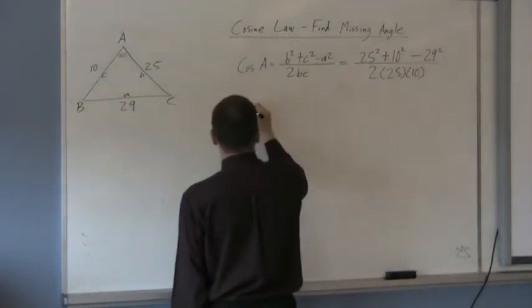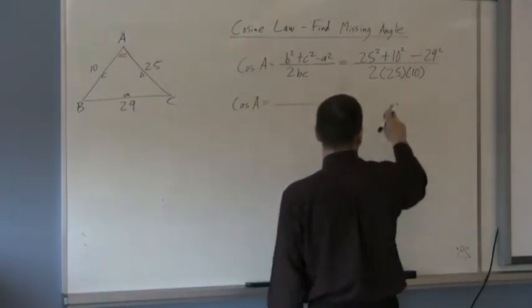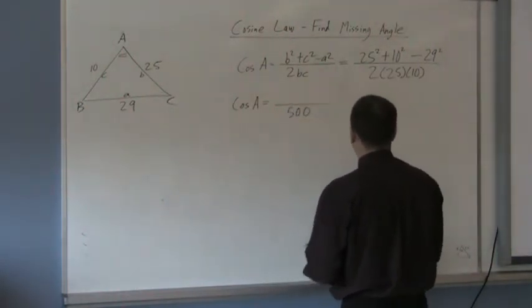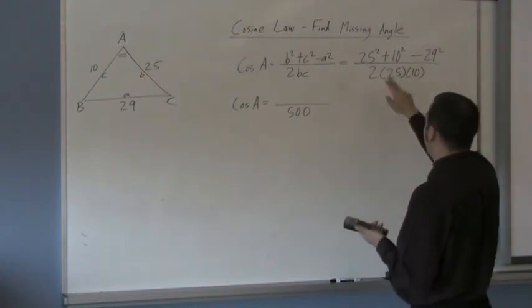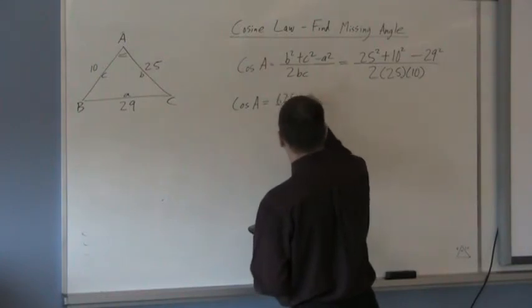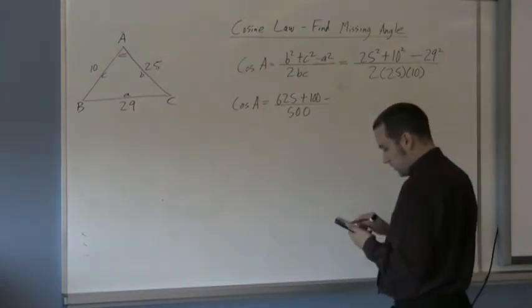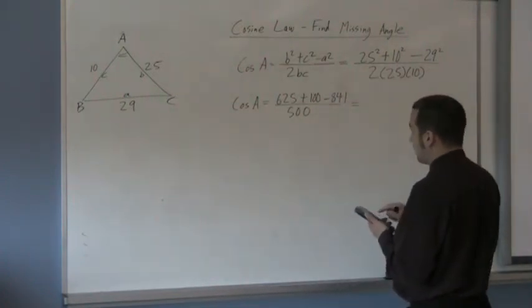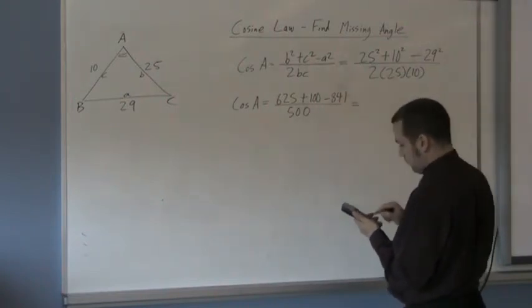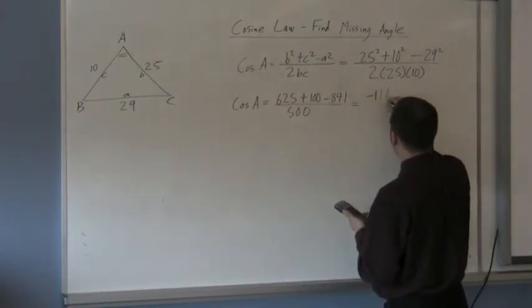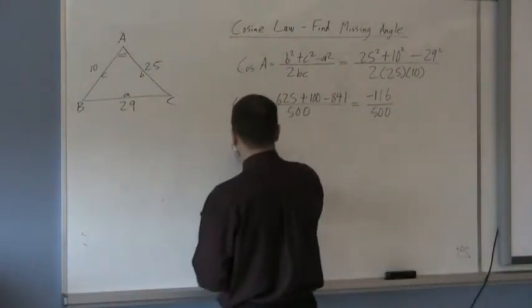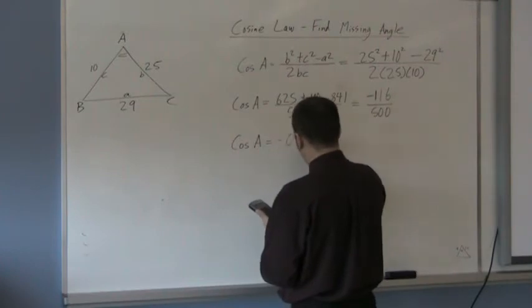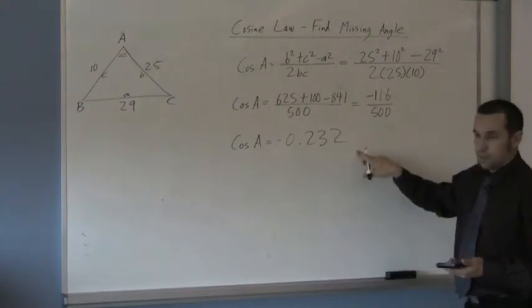So then I'm going to have the cos of A is equal to, and you fill this into your calculator. The bottom is easy enough. 2 times 25 is 50. 50 times 10 is 500. So I'm not going to use the calculator for that one. And on the top, I'm going to go 25 squared in my calculator. And that's going to give me 625 plus 10 squared is 100. Subtract 29 squared. 29 squared is 841. So that's going to give me 725, which is negative 116 divided by 500. So then I end up that the cos of my angle A is equal to... So we'll divide that by 500 and make it negative 0 decimal 2, 3, 2. And I recommend keeping at least three decimals.